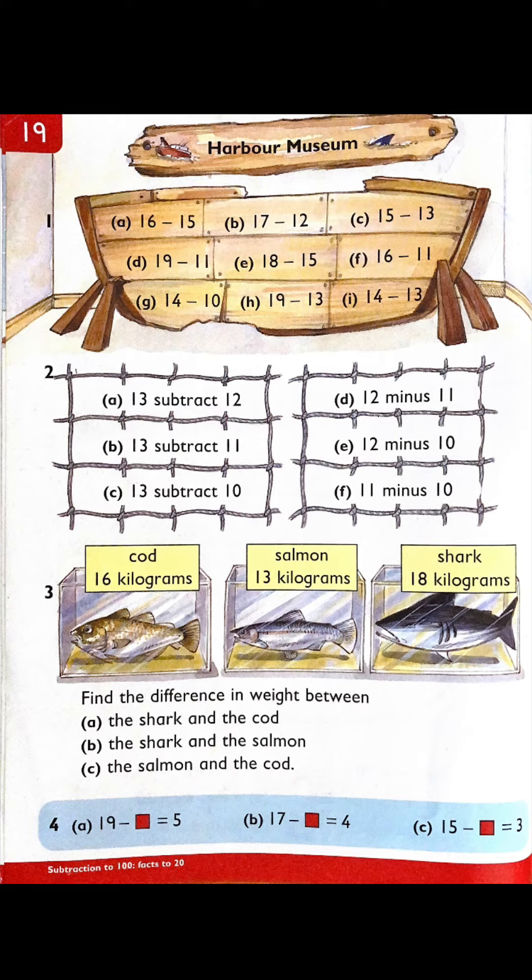That's right, subtraction. So the shark is 18 kilograms and the cod is 16 kilograms, so we know for 3a your calculation is going to be 18 take away 16. I'll let you figure out the other two yourself.